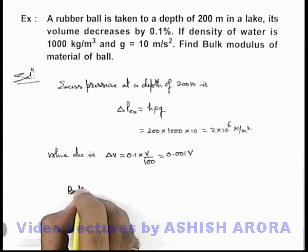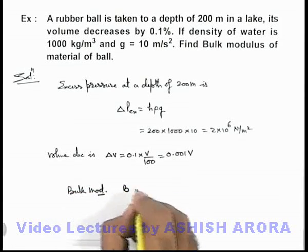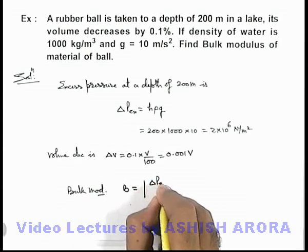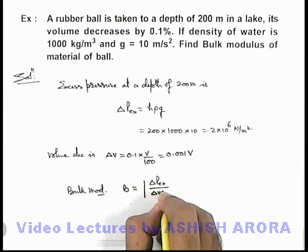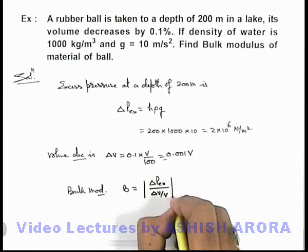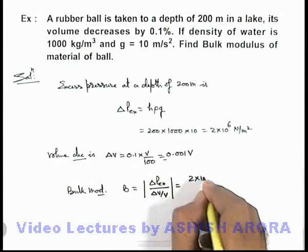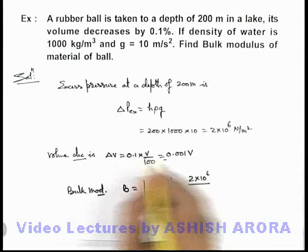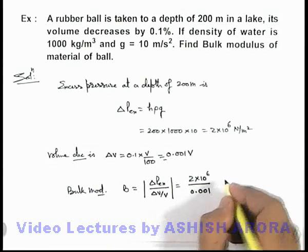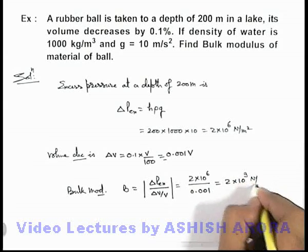We know bulk modulus of a material can be given as magnitude of delta P excess divided by delta V by V. Here it is the decrease in volume, so it must be negative, but as we need to take the modulus, it must be written as 2 into 10 to the power 6 divided by delta V by V, which can be written as 0.001. So the result is 2 into 10 to the power 9 newtons per meter squared.